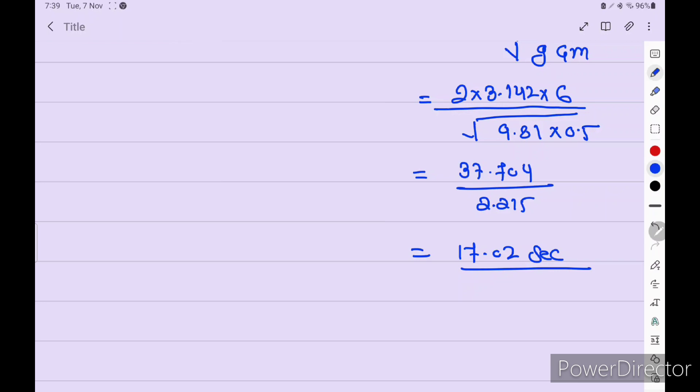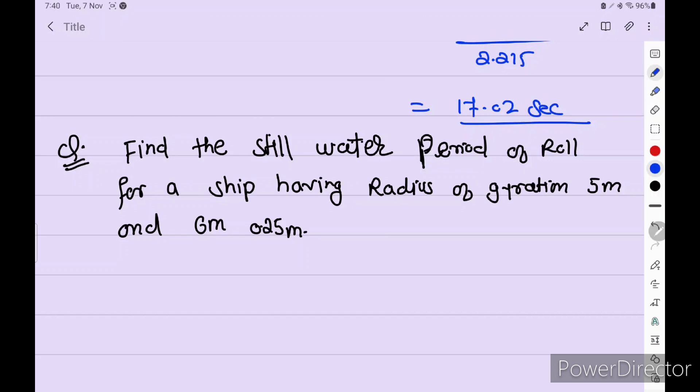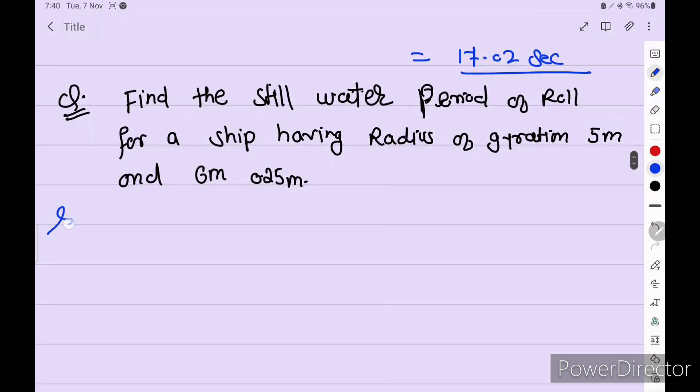Let's solve the next question. Find the still water period of roll for a ship having radius of gyration 5 meters and GM is 0.25 meters. Generally the question is coming the same way. They change the radius of gyration value and the GM value and the rest everything is same.